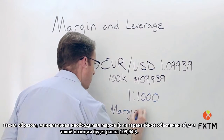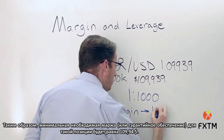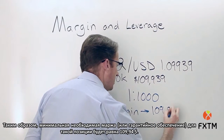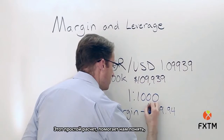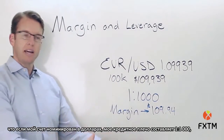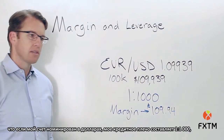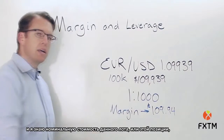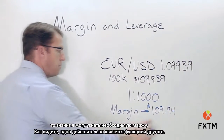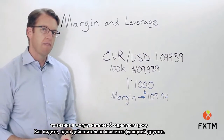The minimum margin required is going to be $109.94. This is an easy calculation: assuming your account is denominated in dollars and you have a leverage ratio of 1 to 1,000, you can determine the notional value of your position and calculate your margin requirement. So margin and leverage are really functions of each other.